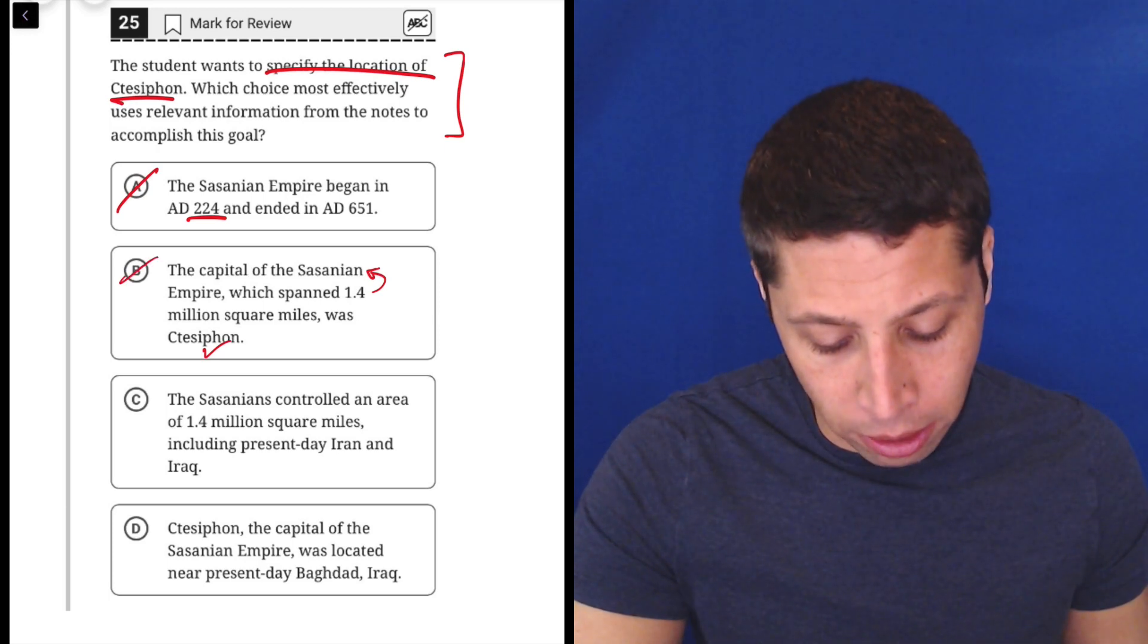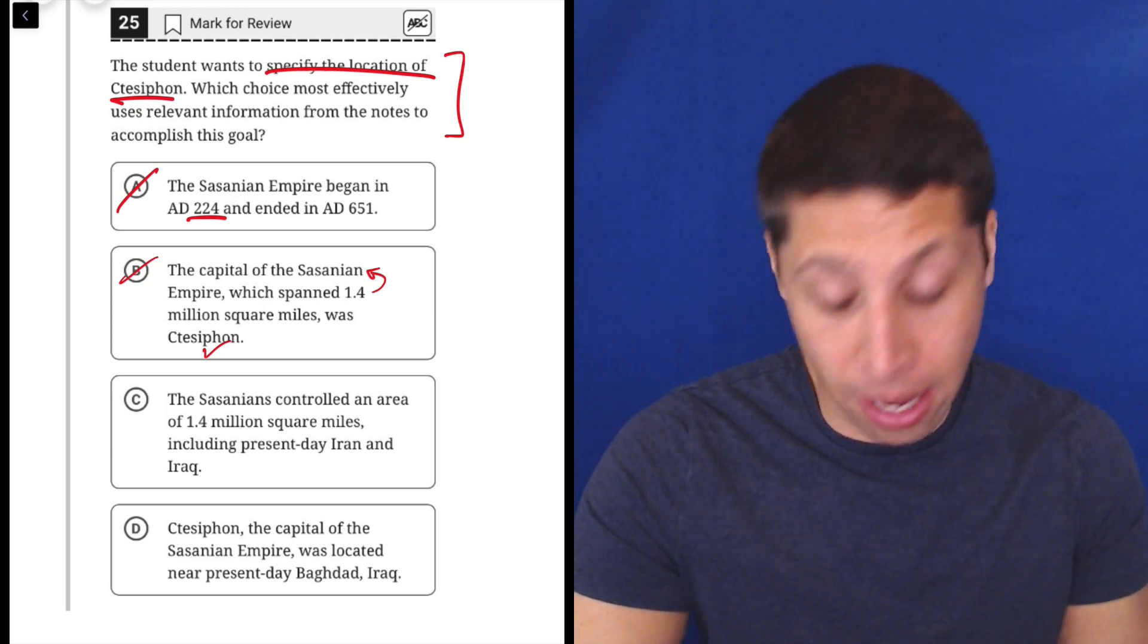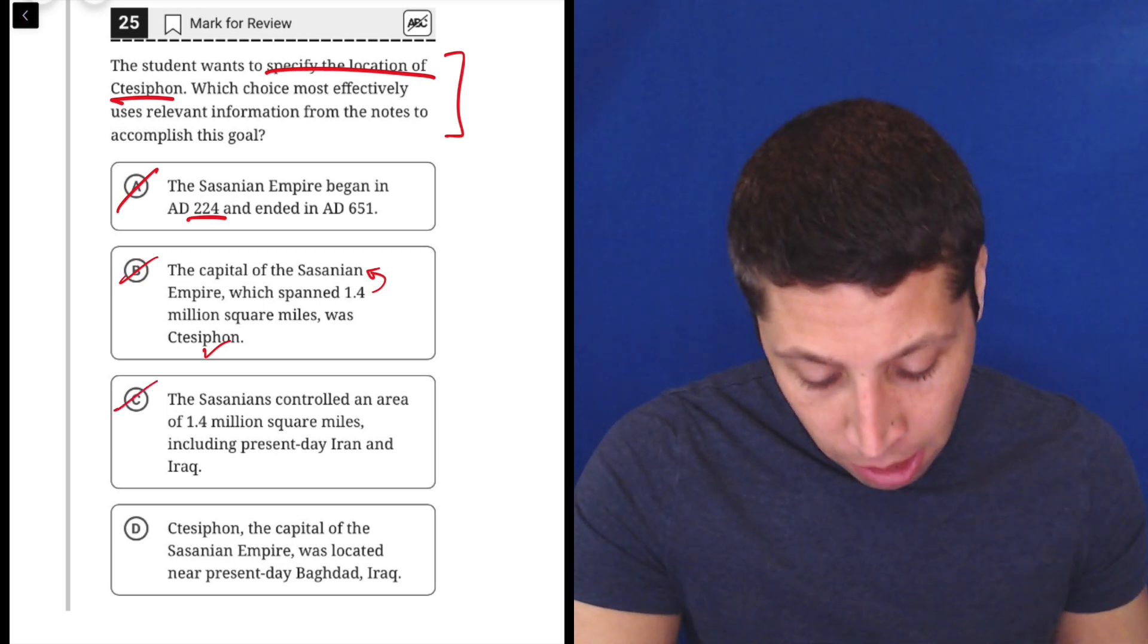The Sassanians controlled an area of 1.4 million square miles, including present-day Iran and Iraq. Again, we've got nothing about the city. So hopefully D.